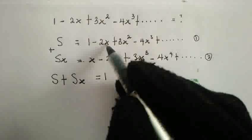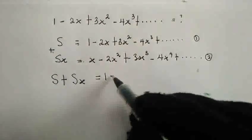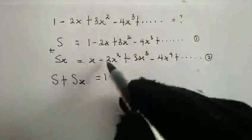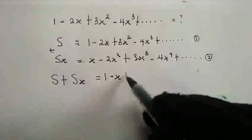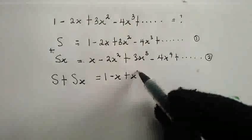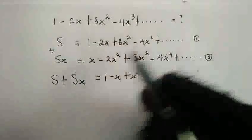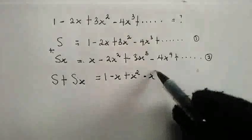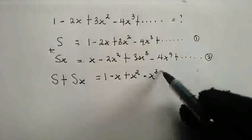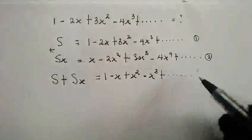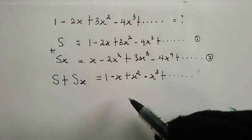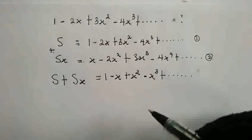So, minus 2x plus x is minus x. 3x squared plus minus 2x squared is plus x squared. Minus 4x cubed plus 3x cubed is minus x cubed. Then, plus and so on. Wow. So, we obtain a nice infinite series which has a common ratio.